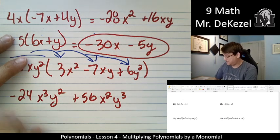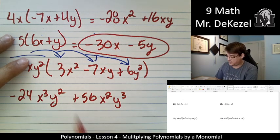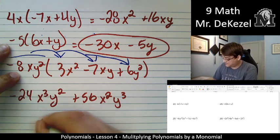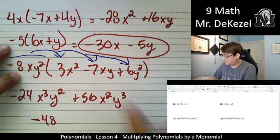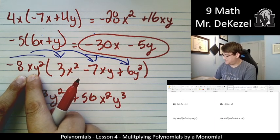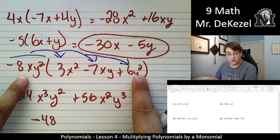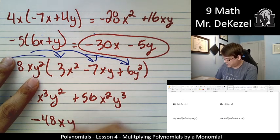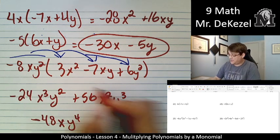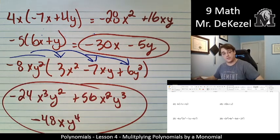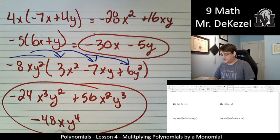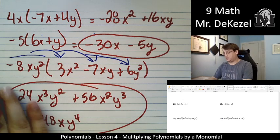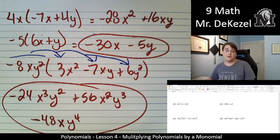Minus 8 times 6, that's 48, so it's minus 48. x is just being brought along. There's nothing to multiply it by. And y² times y², that's y to the power of 4. We add their exponents. So this right here is our answer. We are just multiplying each number by each number, and the variables by the variables.